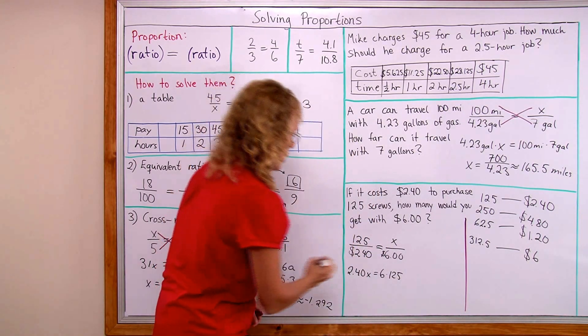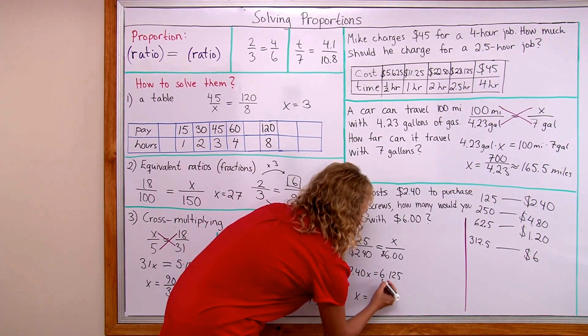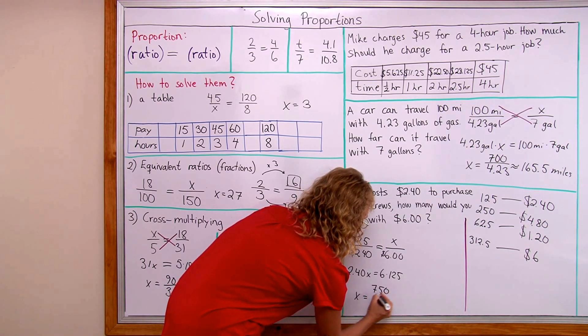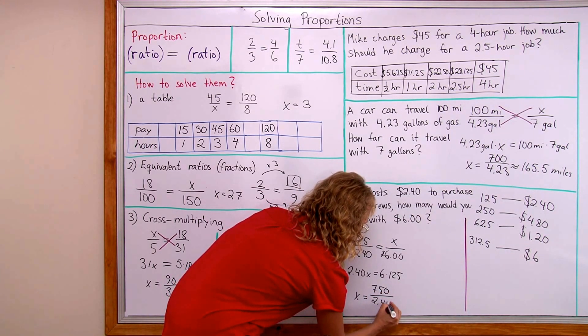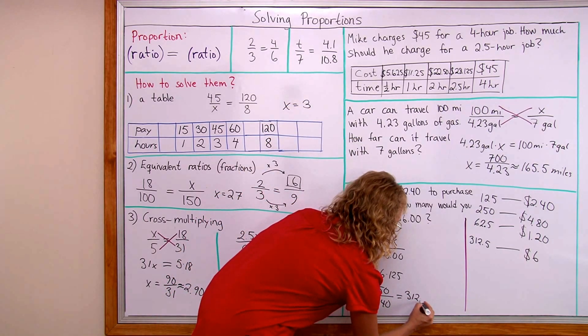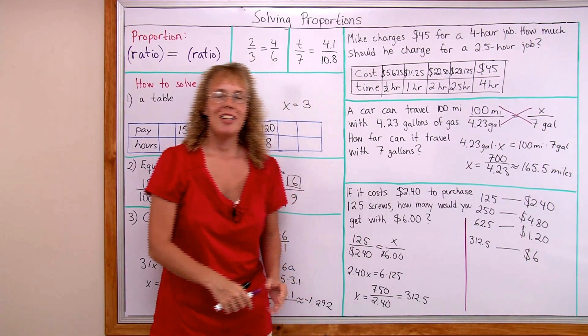And now x equals that number which is 750 divided by two dollars plus 40. And you should get the exact same answer, of course. Okay. Okay, we're all done and I hope this was helpful.